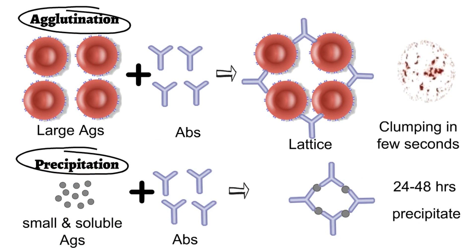So keep in mind that we cannot detect small and soluble antigens quickly like particulate antigens. But by using the agglutination inhibition test, we can detect the presence of small and soluble antigens very rapidly, even those that don't show agglutination reaction on their own.